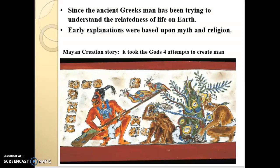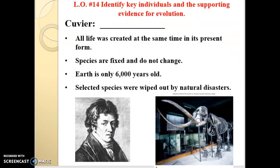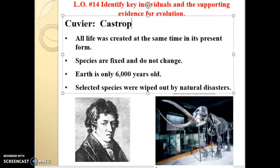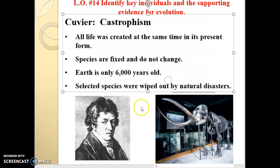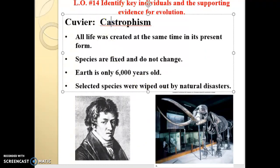Humans have been trying to sort this out since they first started understanding themselves and life on Earth. Some of the key figures go back to the 1800s, when the scientific method really starts rolling and more people are approaching things from a scientific perspective. Back in the 1800s, we have a gentleman named George Cuvier, who came up with this idea called catastrophism.